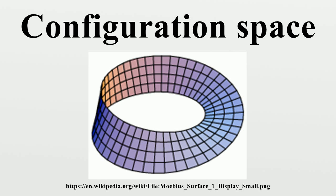In robotics, configuration space refers to the set of positions reachable by a robot's end effector, considered to be a rigid body in three-dimensional space. Thus, the positions of the end effector of a robot can be identified with the group of spatial rigid transformations. The joint parameters of the robot are used as generalized coordinates to define its configurations, and the set of joint parameter values is called the joint space. The robot's forward and inverse kinematics equations define mappings between its configurations and its end effector positions, or between joint space and configuration space.